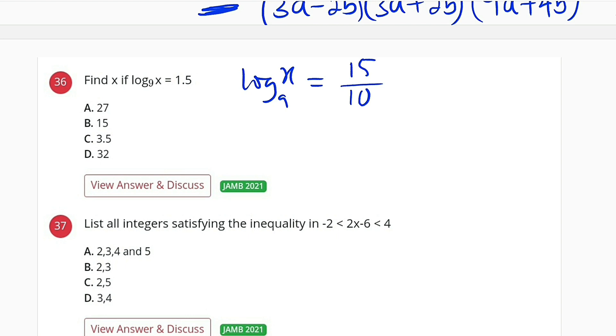And I can reduce this to 3 over 2: 5 can go into 15 three times and 5 can go into 10 two times. So by the definition of logarithm, I can take this base 9 and raise it to the power of 3 over 2, and it will give us this x.